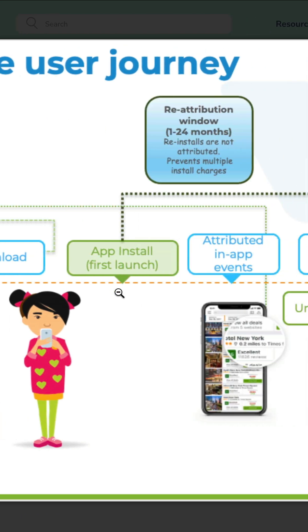When they first install the app and on the very first launch, this is when App Store really kicks in. App Store can start to make determinations — say, this install came from Facebook, this install came from Google. To do this, App Store has to be integrated properly.